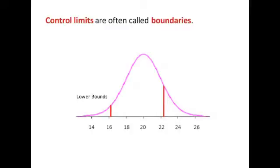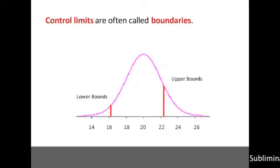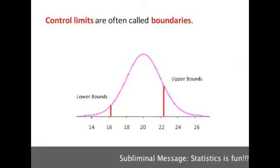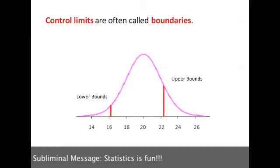The number that is just above 16 is called the lower bounds. And the number that is just above 22 is called the upper bounds. So if I'm looking for the area between these two bars, I'm looking for the area between the lower bounds and the upper bounds.